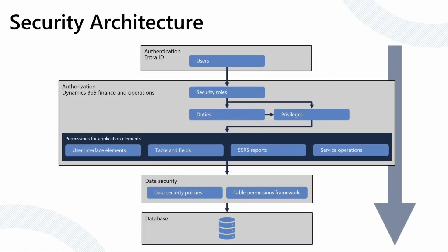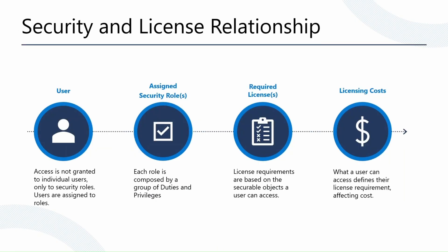From a security architecture standpoint, only authenticated users can establish a connection to D365. This controls who can get to the front door of the application, while the security roles, duties, and privileges control what you can do within the application. Permissions are controlled to provide individual access, with further control built in at the data layer as well. Security is what then helps drive the licensing requirements, as user access granted through security roles drives different values and requirements based on what that user does within the system.